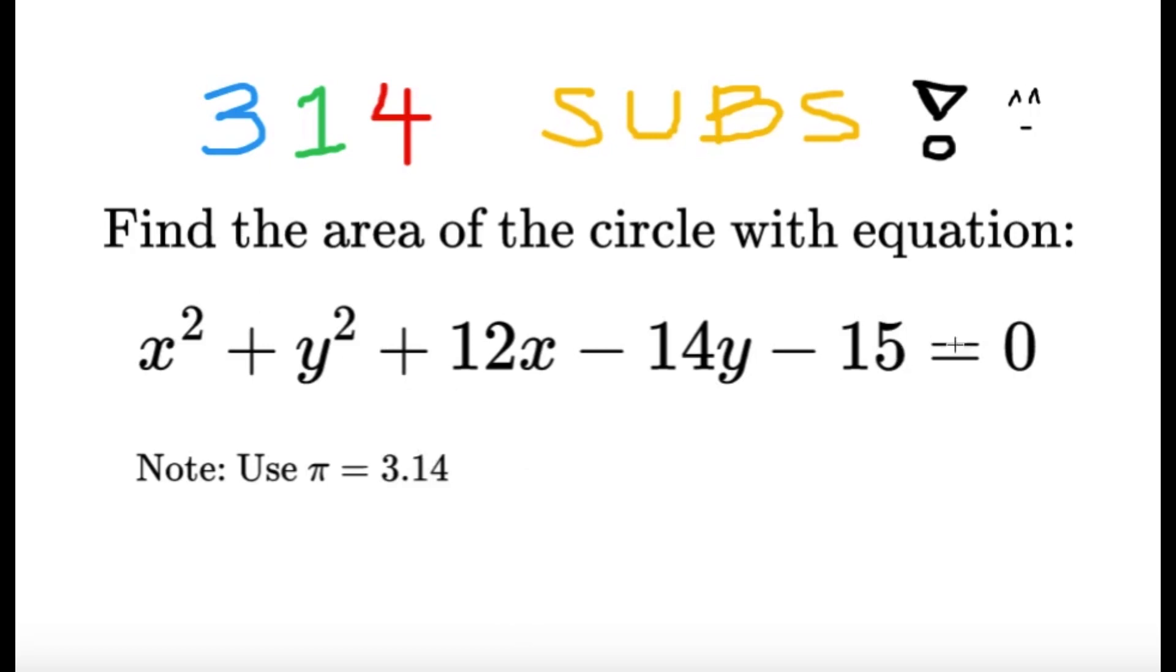Find the area of the circle with equation x squared plus y squared plus 12x minus 14y minus 15 equals 0, and to keep up with the theme of 314 subscribers let's use pi equals 3.14.